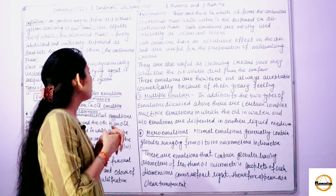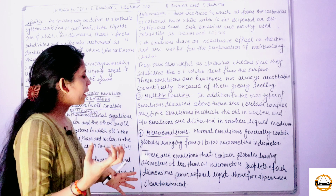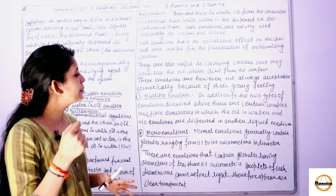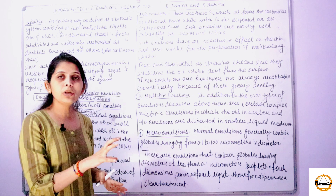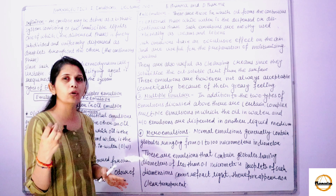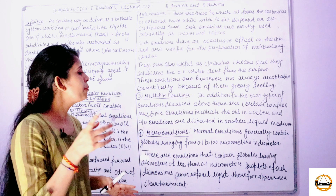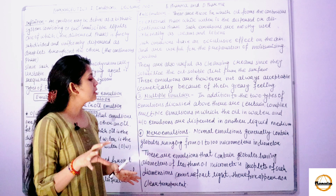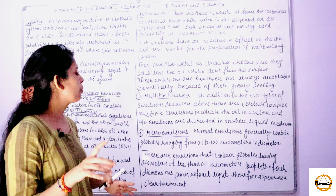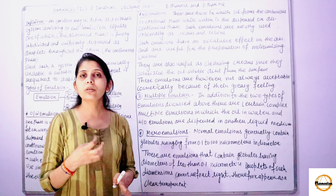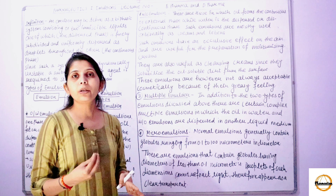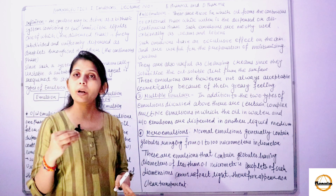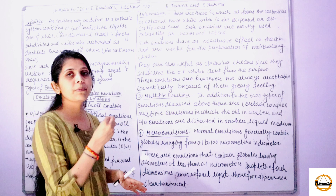Moving to the last category — microemulsions. As the name indicates, micro means small particles. Normal emulsions generally contain globules ranging from 0.1 to 100 micrometers in diameter. But microemulsions contain globules having a diameter of less than 0.1 micrometers. Because of this very small particle size, they are known as microemulsions.